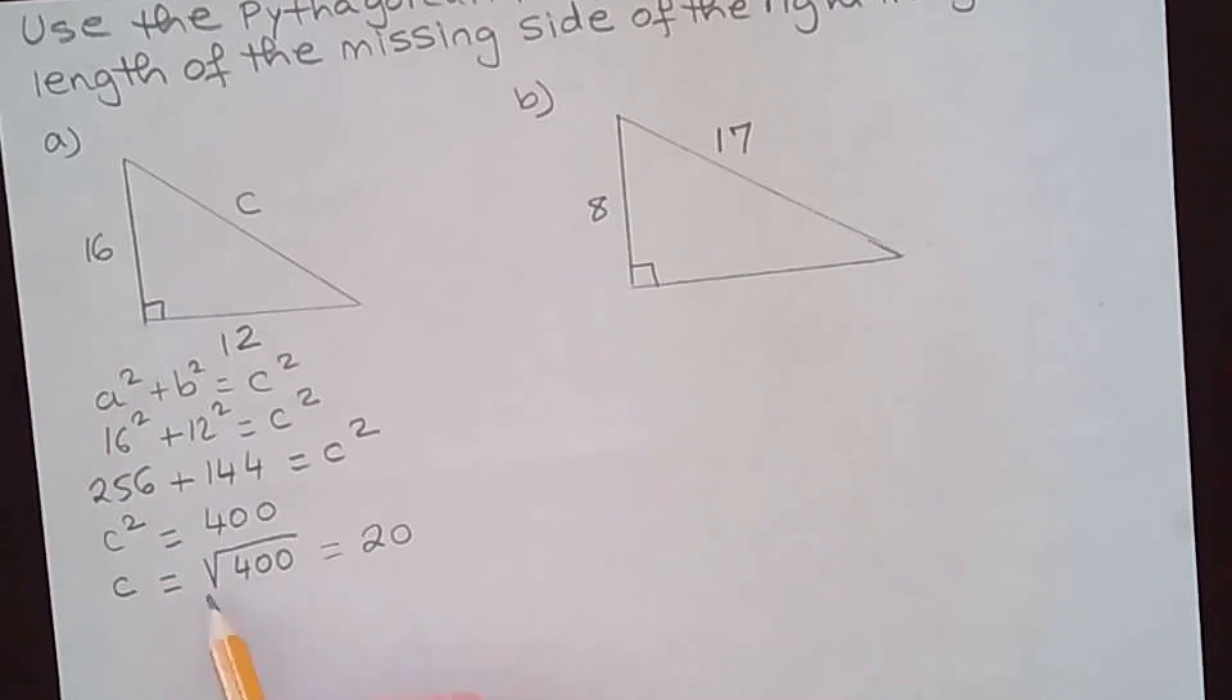If you recall when we were solving square root, you use plus or minus. We can't do that here. c is the side of a triangle, the hypotenuse. It can never be negative, so you can only take the positive answer. Square root of 400 is 20, so the hypotenuse is 20.